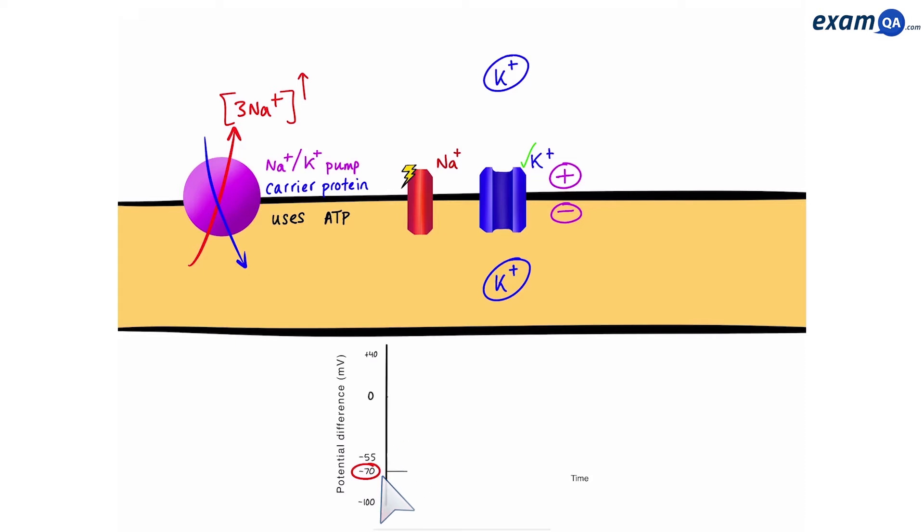Now, it can stay like this forever, or let's say here it got stimulated. So, what does that mean for the neuron?